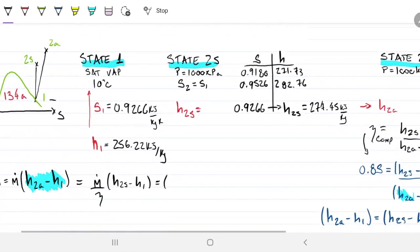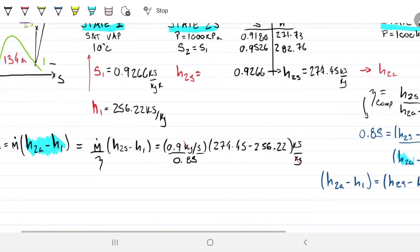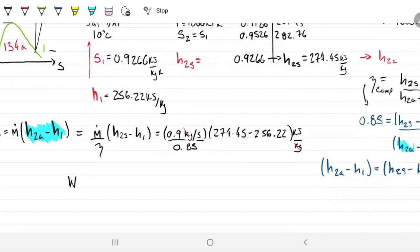Let's put in the numbers that we have: 0.9 kilograms per second. This guy 2S is 274.45. The other one is 256.22. And we're dividing all this by 0.85. This is kilojoules per kilogram. So kilograms cancel, you're left with kilowatts, which is great because that's what we're looking for. So the power of the compressor equals 19.3 kilowatts.